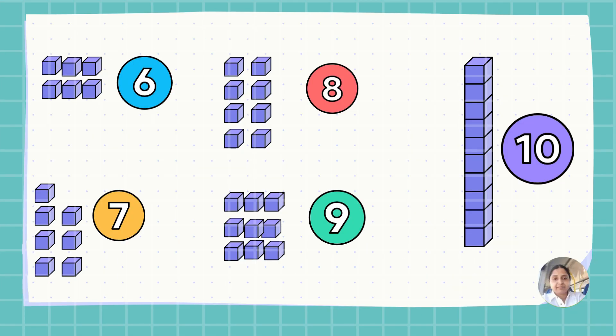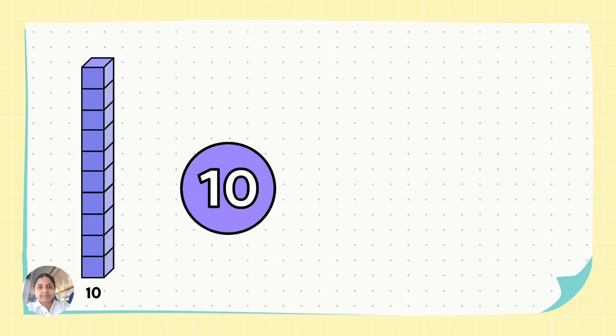Six unit blocks makes number six, seven unit blocks makes number seven, eight unit blocks makes number eight, nine unit blocks makes number nine, and then we have ten unit blocks. The base ten block is made up of ten unit cubes stuck together, so when we skip count by tens, we are really counting these rod blocks. Let's do this together.